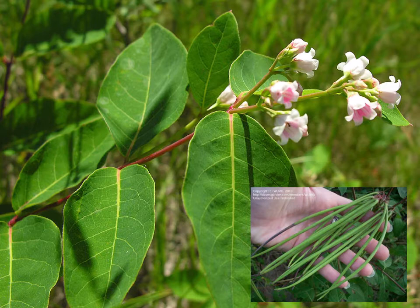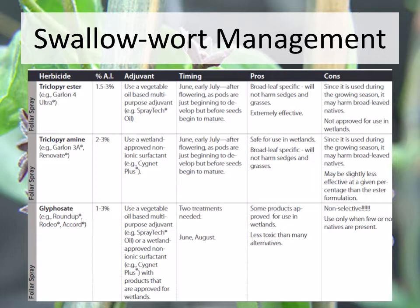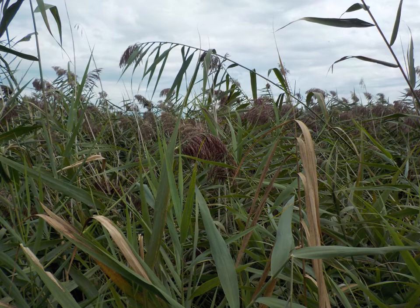Another potential lookalike is dogbane. The seed pods are similar — long and skinny — but dogbane is not a vine, and the flowers are bell-shaped. Digging out swallowort is only effective if the entire root crown is removed; otherwise it will stimulate regrowth, which is what also happens with cutting and mowing. Seed pod removal will reduce spread but does nothing to existing populations, so next year they will grow back exactly the same. Other management techniques involve a chemical foliar spray.